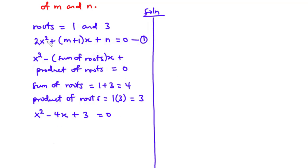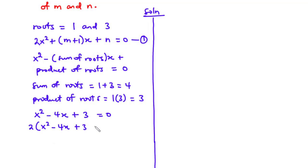The coefficient of x squared in equation 1 is 2, and in the new equation it is 1. In order to compare the coefficients of both equations, we multiply the new quadratic equation by 2. This becomes 2 times (x squared minus 4x plus 3) equals 0, giving us 2x squared minus 8x plus 6 equals 0. Let's call this equation 2.